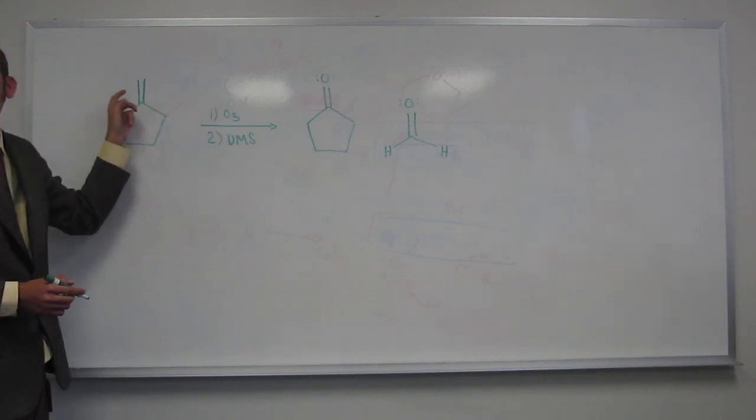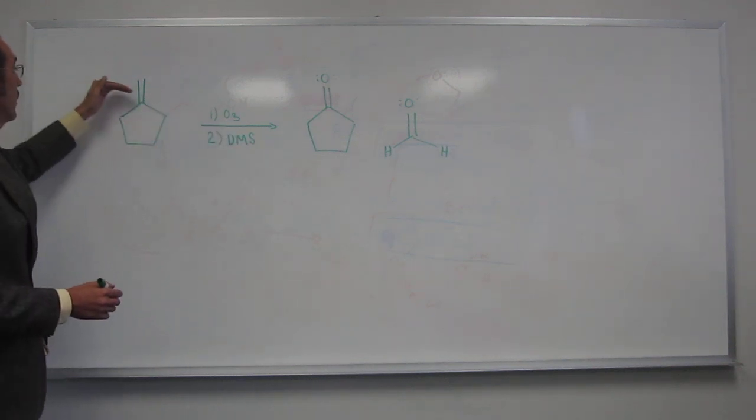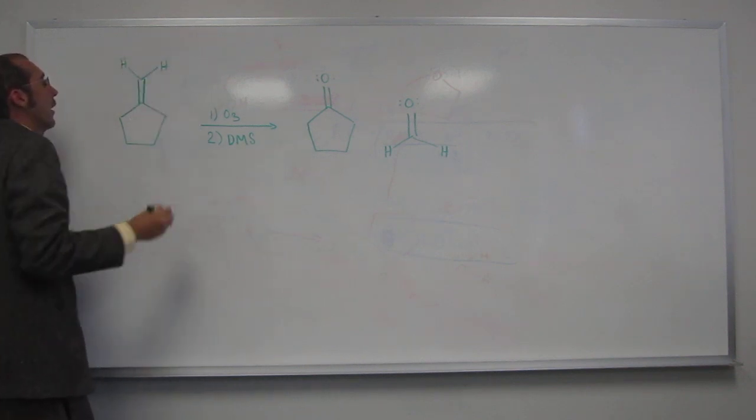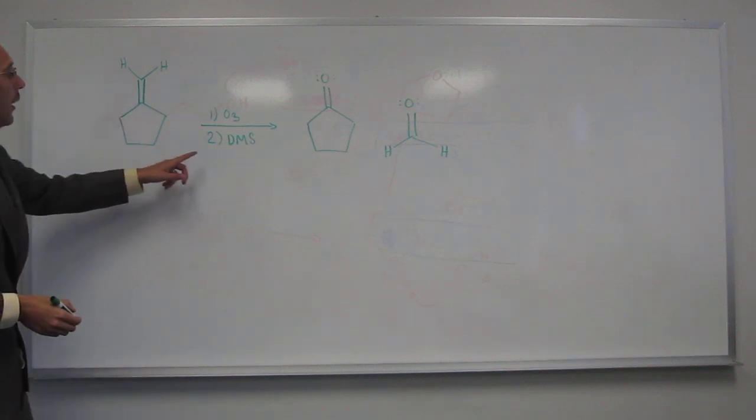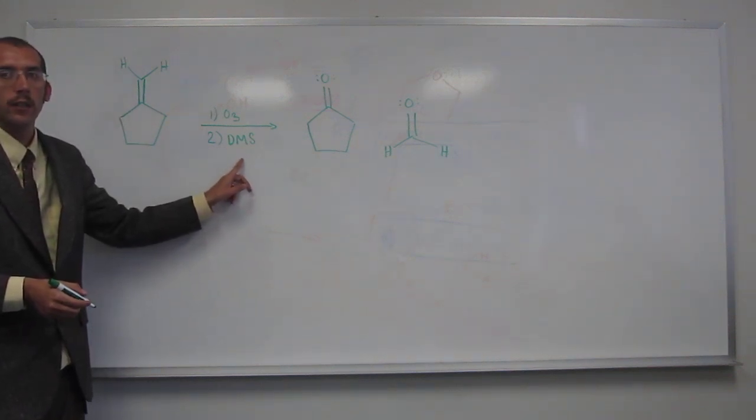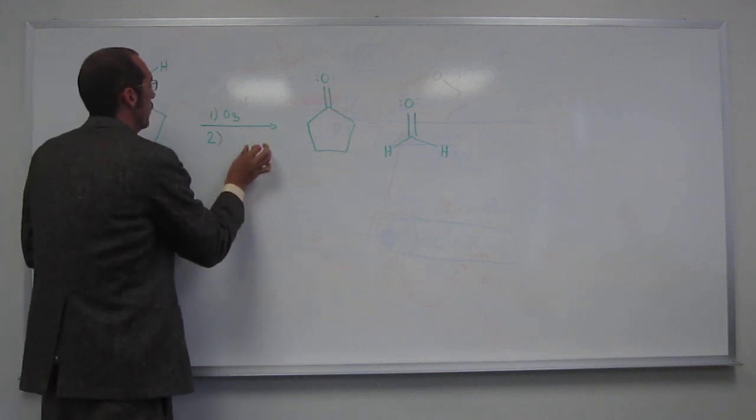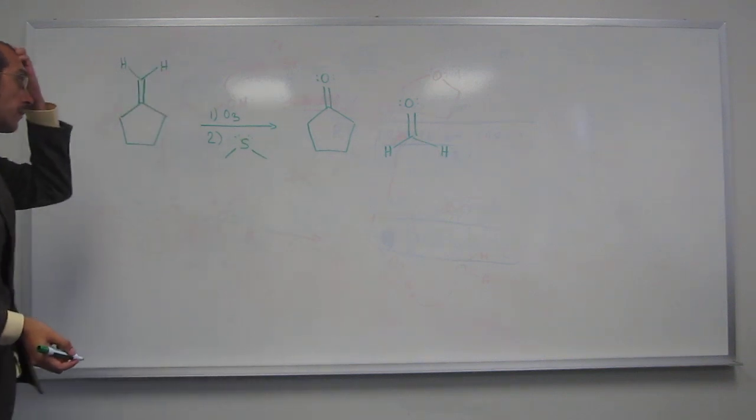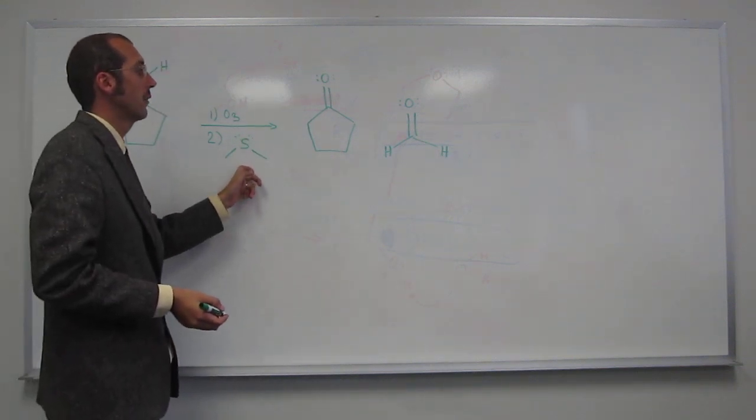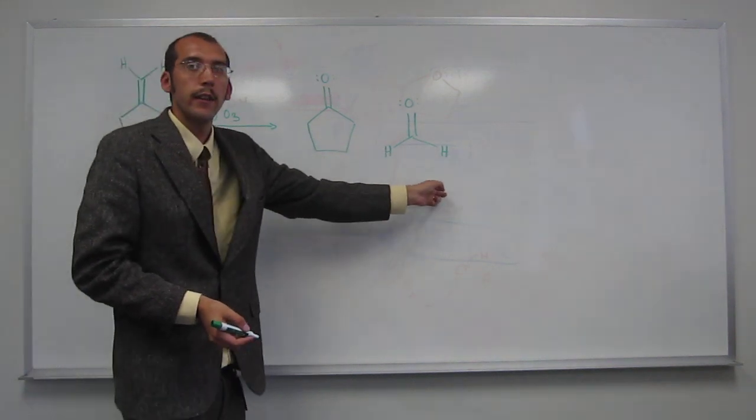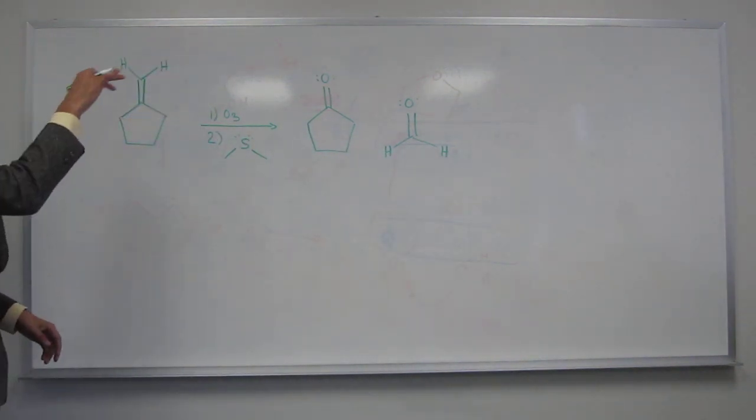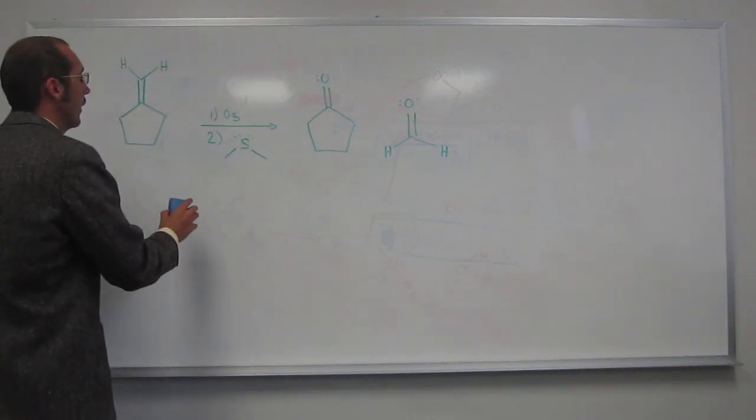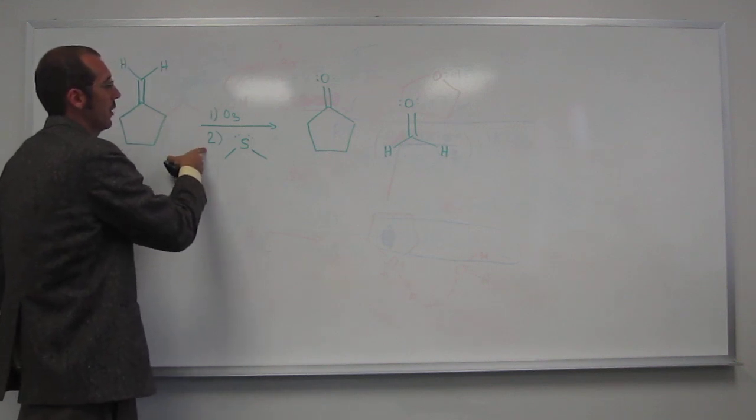We know that ozone is going to cut this double bond in half, cut this alkene in half. And if you want to, you can put those H's there to make sure. And this DMS is the reductive conditions. Remember, DMS is dimethyl sulfide. So we add this first and then this second.